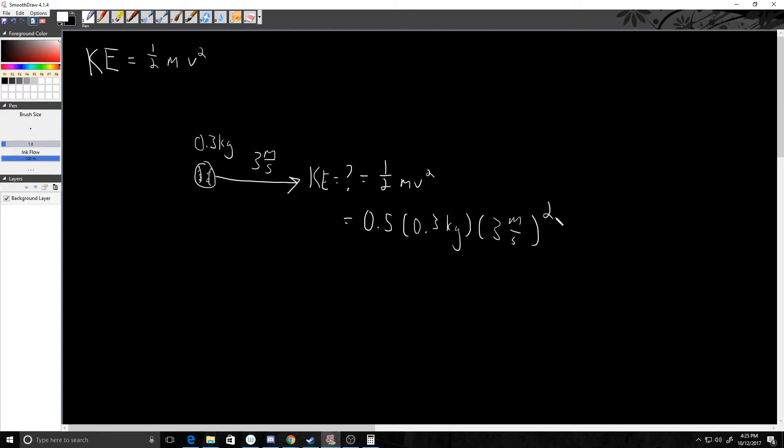So keep in mind, velocity, like I said it was positive, and I put it in the direction where we typically call it positive, to the right there. Because we're squaring the velocity, it doesn't matter what sign our velocity has. Because once you square it, it becomes positive. Your kinetic energy is always positive. You can't have negative kinetic energy.